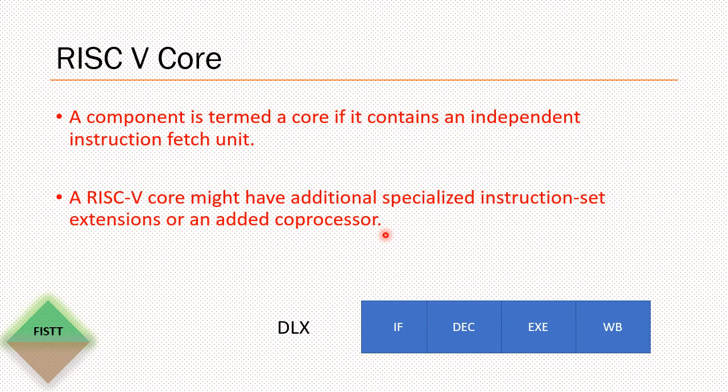A coprocessor might not have an instruction fetch unit by itself, but it is just connected to the RISC-V core and RISC-V instructions can be streamed to this coprocessor and it can handle it by itself.